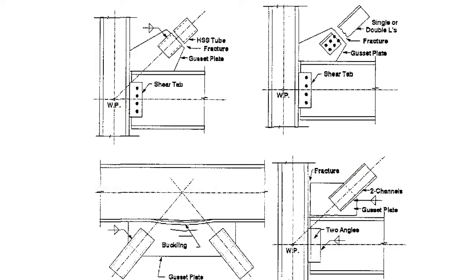If you are not familiar with the gusset plate, normally to connect the bracing with the beam and column we need to use a plate known as the gusset plate. You can connect this gusset plate with the bracing using welding as well as bolts. As you can see here, we have used bolts to connect this gusset plate, and here we have used weld to connect this gusset plate.